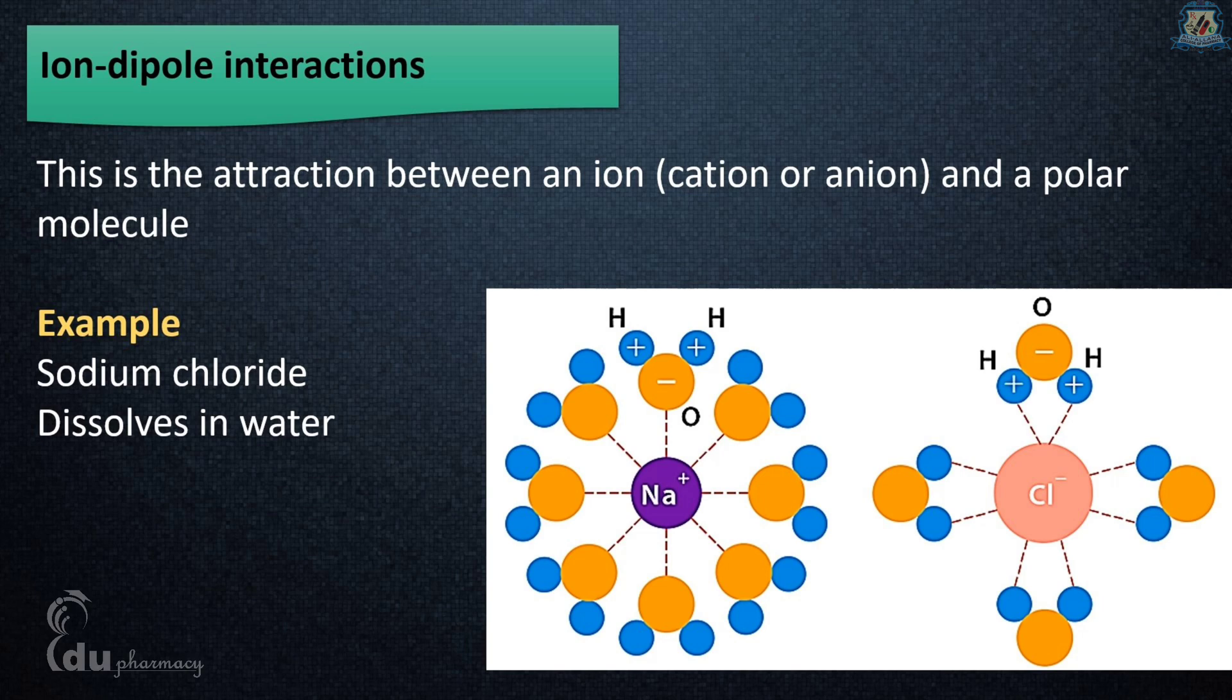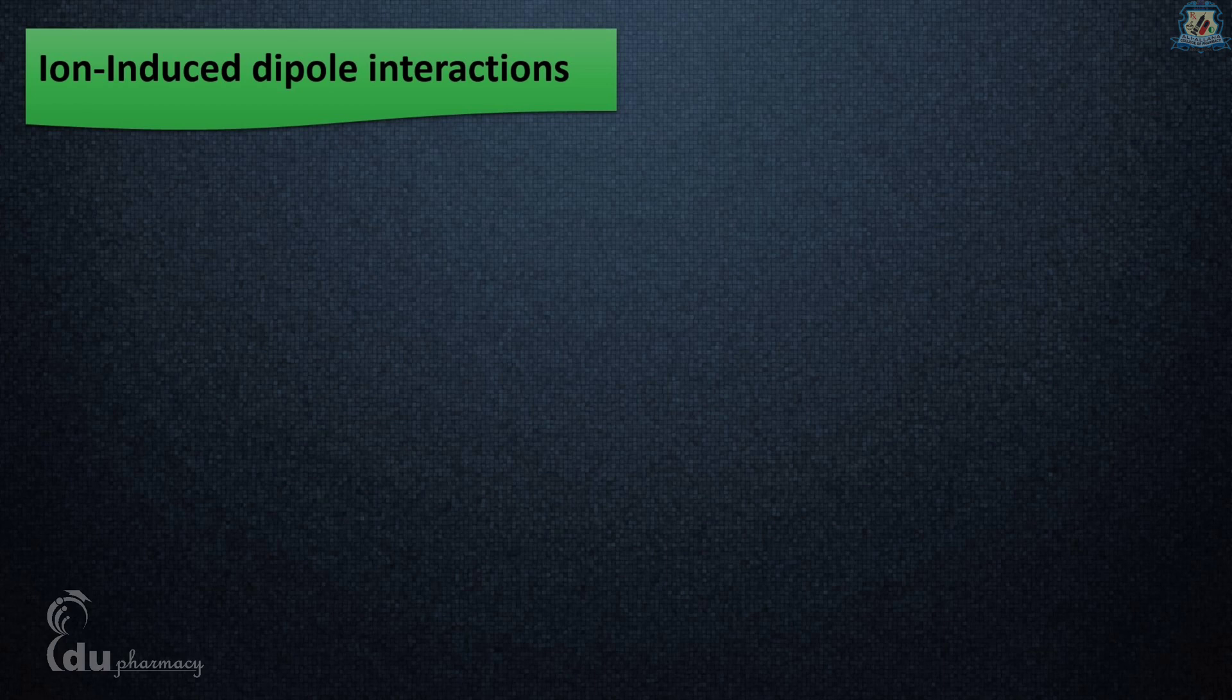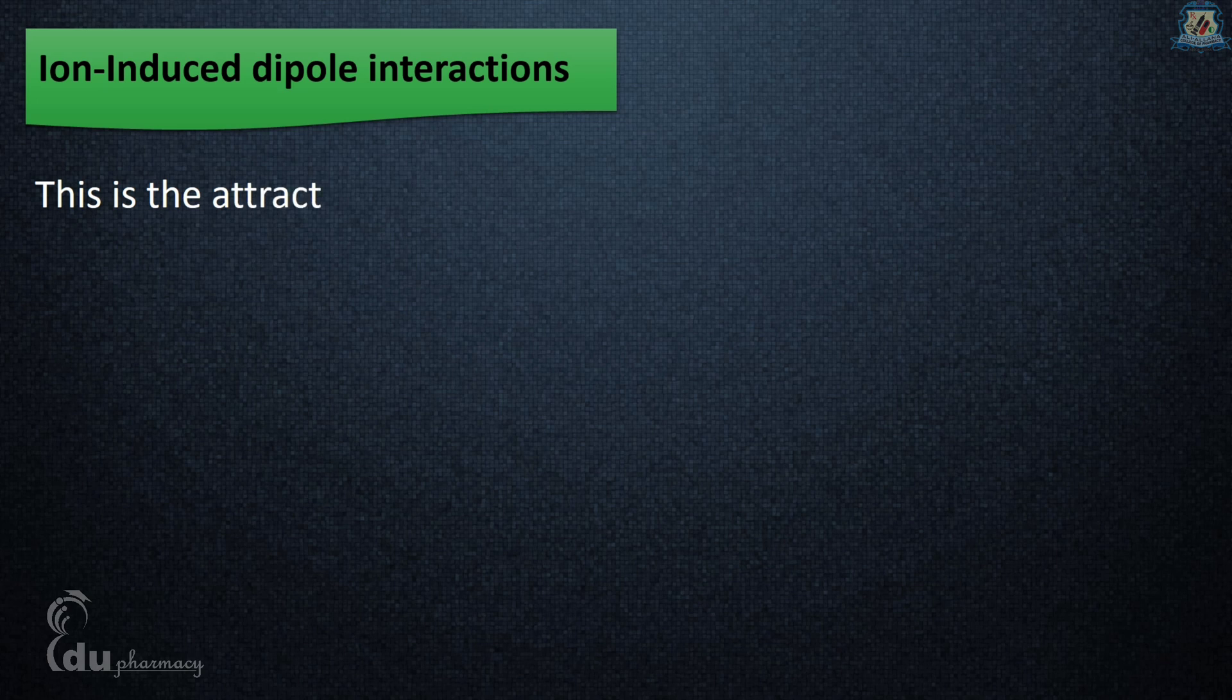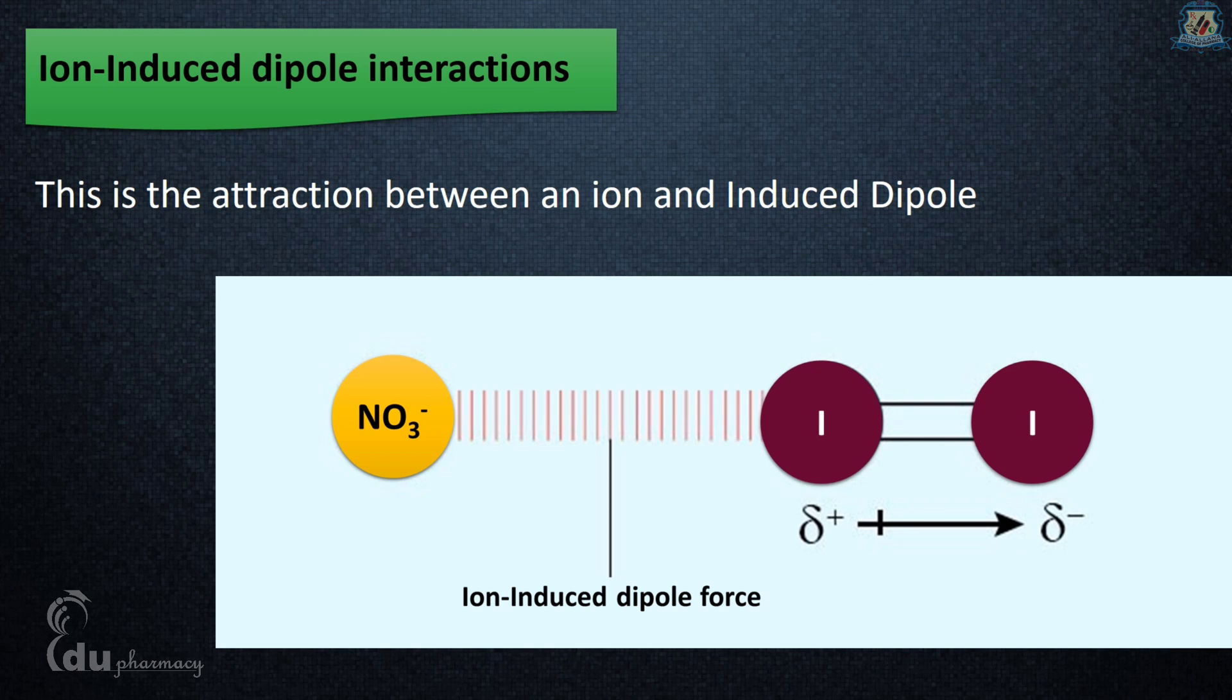Ion-induced dipole interactions: a non-polar molecule may be polarized by the presence of an ion near it, becoming an induced dipole. A cation polarizes the molecule by attraction of electron cloud, whereas an anion polarizes by repulsion. For example, in the presence of nitrate ion, iodine molecule (non-polar) gets polarized as shown in the figure.